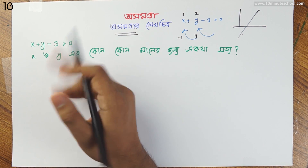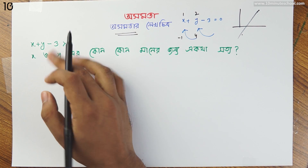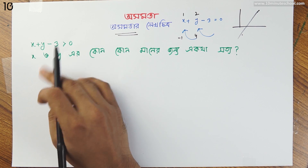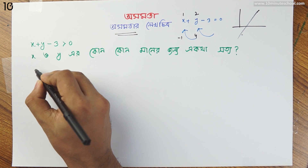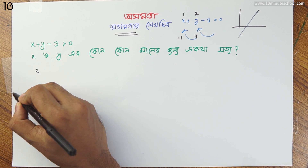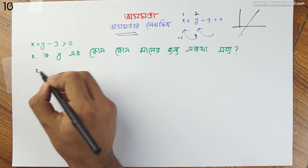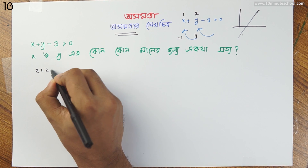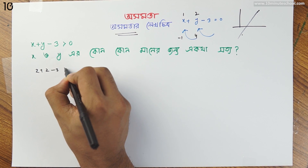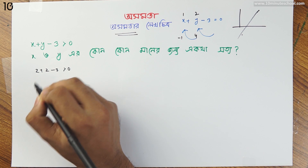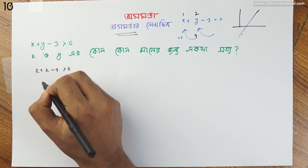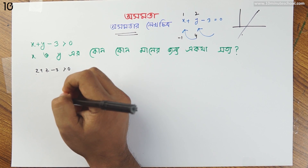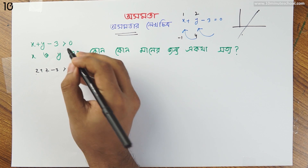x is a kind of value and y is a kind of value. We can find x is 2 and y is 2. So 2 plus 2 minus 3 is greater than 0. 2 plus 2 minus 3 equals 1, and 1 is greater than 0 as well.